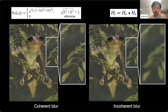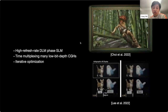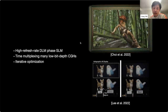On defocused blur: holography operates in the wave domain, so without specific treatment, you always get coherent blur at defocused regions, which is noticeably different from the incoherent blur we observe in daily life. Mathematically, the transfer function for incoherent imaging is the autocorrelation of the coherent imaging kernel. This is a big problem in AR applications where you see both virtual and real-world content. Some recent works, including Suyeon's, have tackled this using high-refresh-rate DLP-based SLMs with time-multiplexing of low-bit-depth CGHs, though these algorithms are iterative and may not suffice for the demanding runtime above 1 kHz.